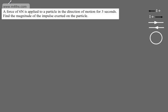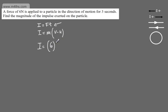A force of 6 newtons is applied to a particle in the direction of motion for 3 seconds. We're asked to find the magnitude of the impulse exerted on the particle. We can write I = Ft or I = m(v − u). Here we'll use the first one. The force is 6 newtons, the time is 3 seconds — check that units are newtons and seconds. Multiplying the two, the impulse exerted on the particle is 18 newton seconds.